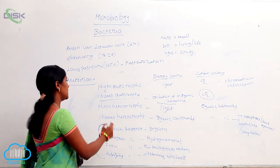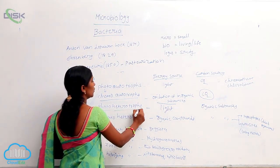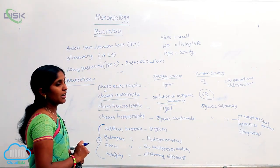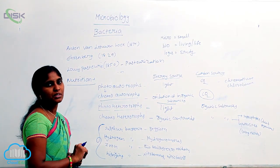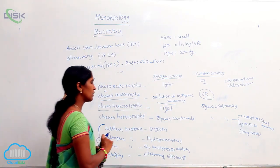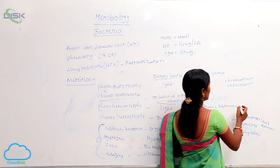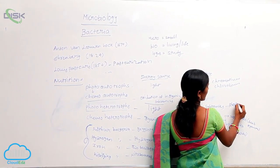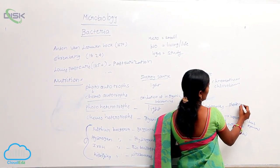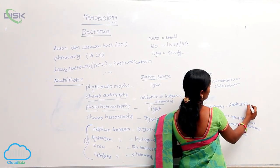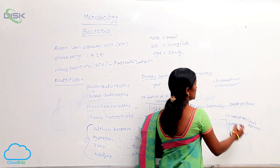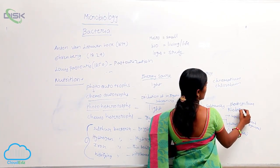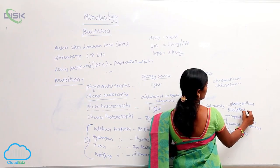The next type is photo-heterotrophs. In the presence of light, they depend on organic substances for their nutrition. Examples are Rhodospirillum and Rhodopseudomonas. These two are examples of photo-heterotrophs.